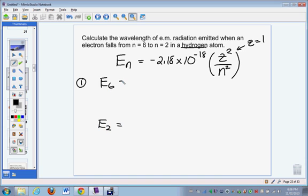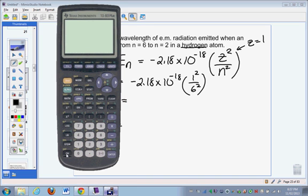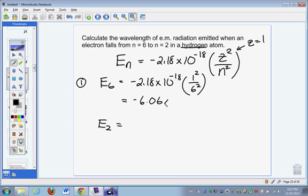So E6 would be negative 2.18 times 10 to the minus 18, times 1 squared, the atomic number z for hydrogen is 1, divided by 6 squared, the energy level that we're dealing with. We'll grab a calculator, and we'll turn it on and clear here, so negative 2.18 times 10 to the minus 18, and then times 1 squared, doesn't really do anything, but divided by 6 squared, will give us negative 6.06 times 10 to the minus 20 joules. And that's the energy of the electron in the 6th level, within hydrogen.